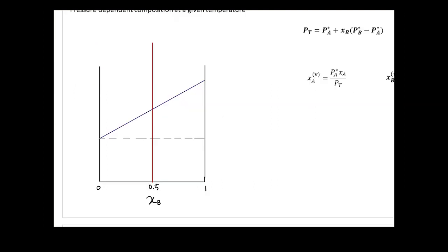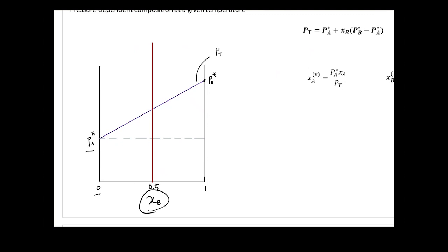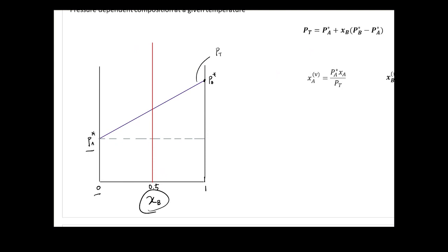Now we look at a composition-pressure plot. The line shown represents P_total, the total vapor pressure of the system with two components A and B. When xB = 0, the pressure is just pA*, the pure substance vapor pressure. We also have pB*. Between those limits you have a mixture, and the overall pressure is described by the P_total line. The chemical composition of the vapor phase is described by a second line underneath P_total.